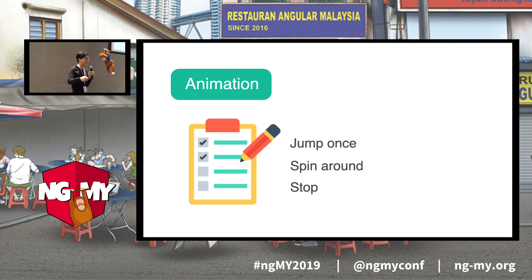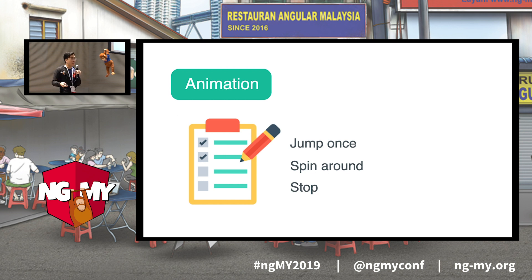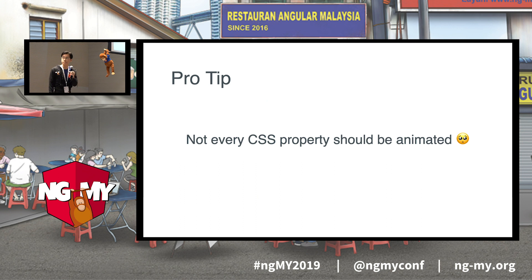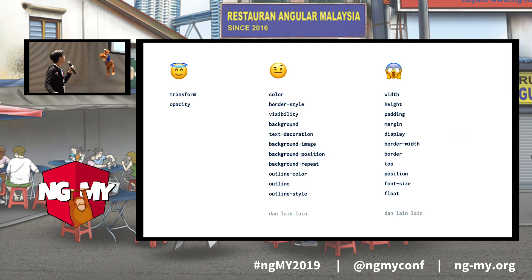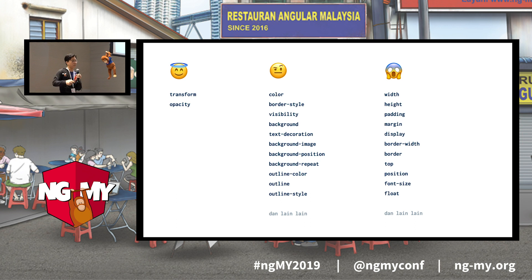CSS animations, on the other hand, are for giving your HTML elements a set of instructions to step through one at a time over a timeline. Pro tip: both in CSS animations and Angular animations, not every CSS property is created equally. For performance reasons, we strongly suggest that the only things you should animate are the transform property and the opacity property. There's a good reason for this — I've included an article at the back of my slides if you're interested.